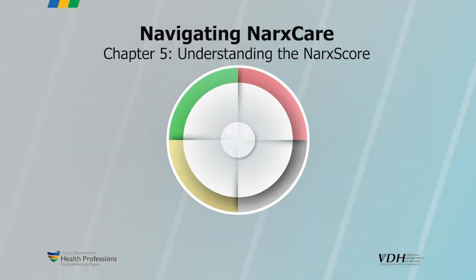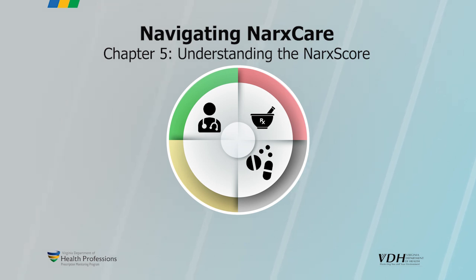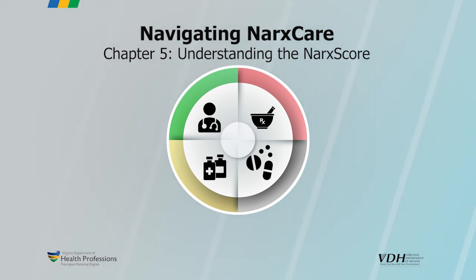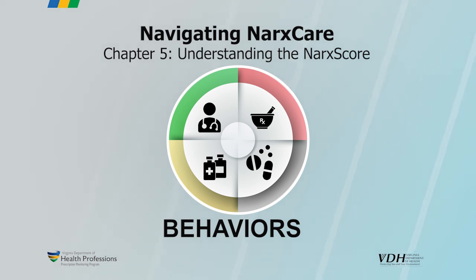During the multi-dimensional analysis, several parameters are considered: the number of providers, the number of pharmacies, concomitant medications, and overlapping prescriptions. These four parameters are referred to as behaviors.